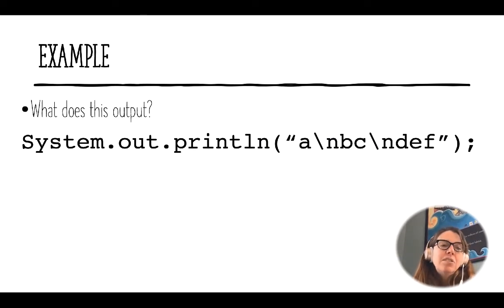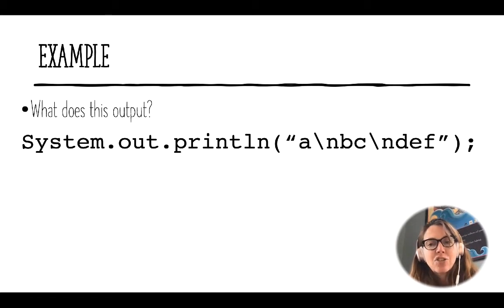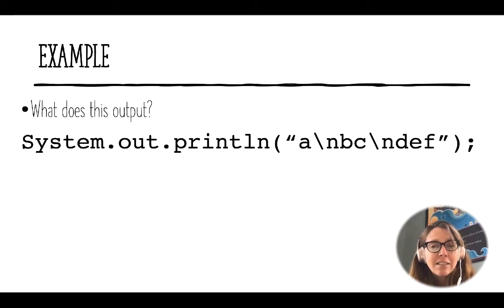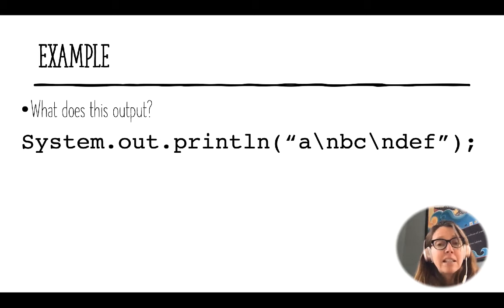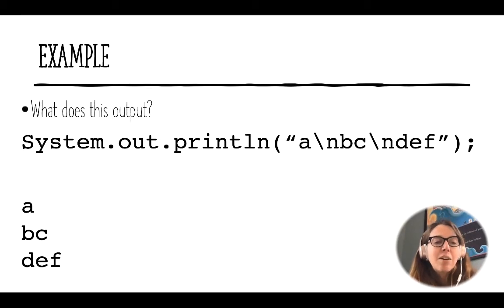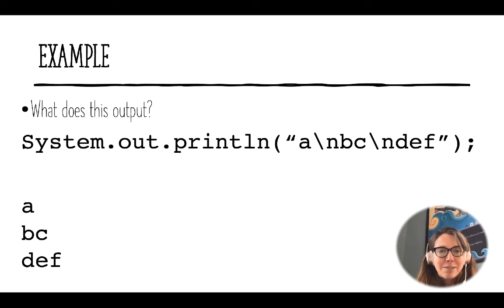Here's an example: what does System.out.println("a\nbc\ndef\"") output? The \n is a control sequence meaning new line, and a control sequence only looks at the character immediately following the backslash. So the output is: 'a', then a new line, 'bc', then a new line, 'def"' — as shown on screen.